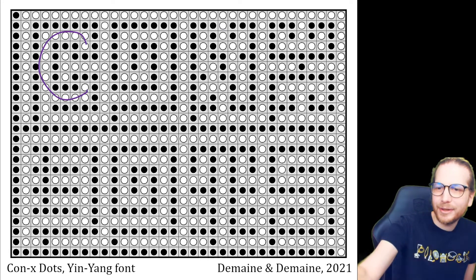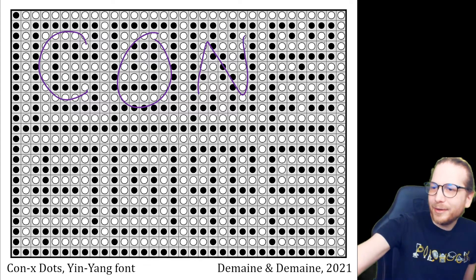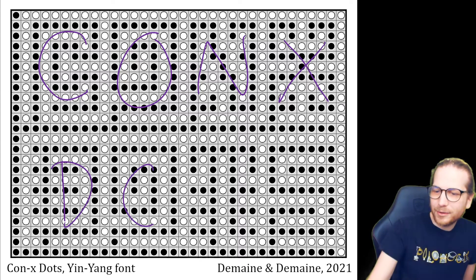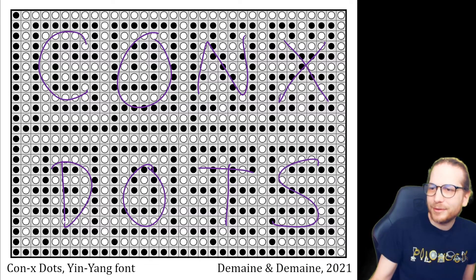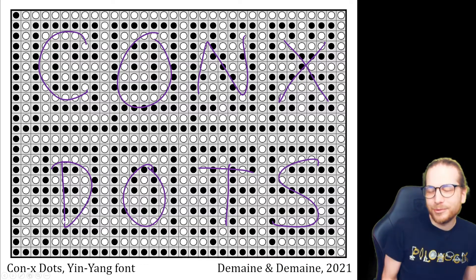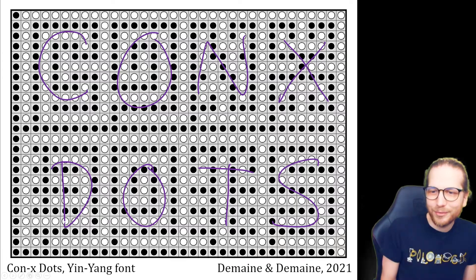This is a little more subtle than some of the other fonts. So there's a C here, O, N, X, D, O, T, S. So this connects the dots, which is self-referential, again, trying to describe how to solve a yin-yang puzzle.